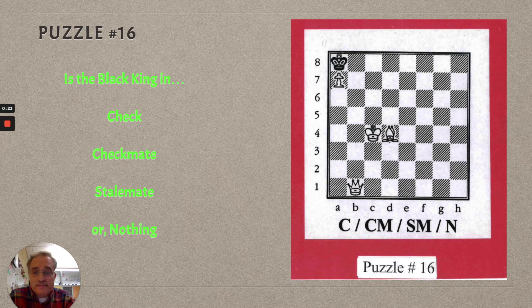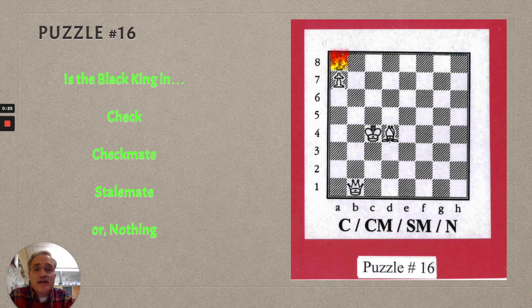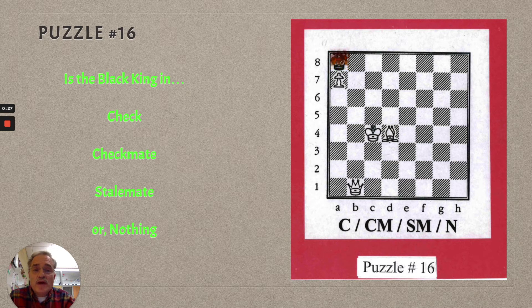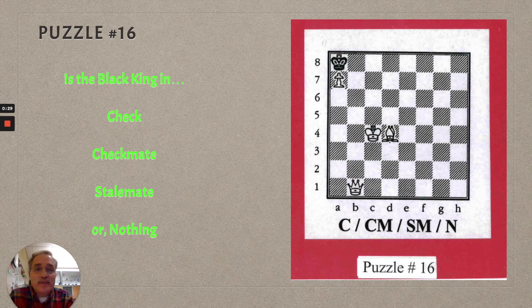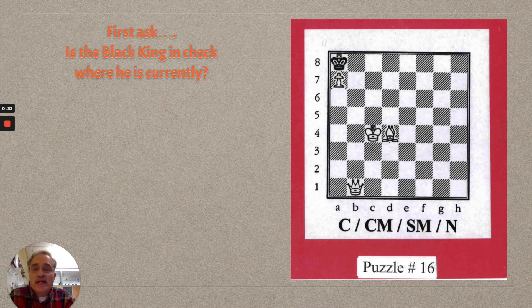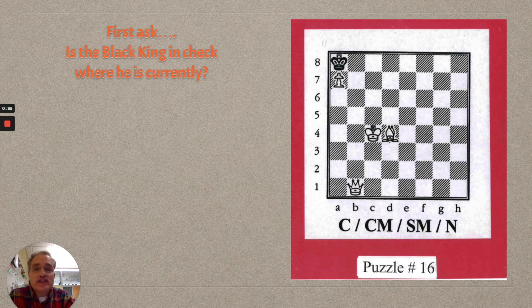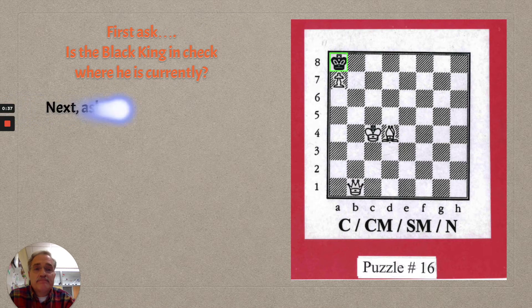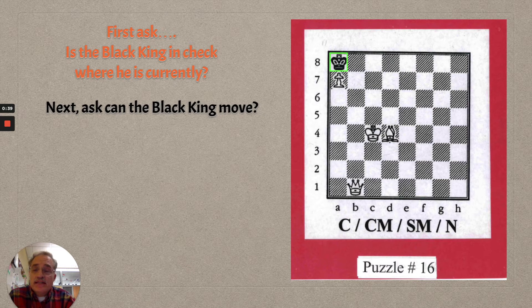You saw that the flames were on square a8. That's where the black king is. So first ask yourself, is the black king in check where he currently is? Next, you have to ask yourself, can the black king move?